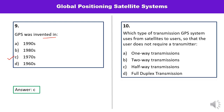Question number ten: Which type of transmission does a GPS system use from satellite to users? Read this carefully — GPS transmits from satellite to users so that the user does not require a transmitter. The options are one-way, two-way, half duplex, or full duplex. When a transmitter is not required, this is a one-way transmission. So A is the correct answer.